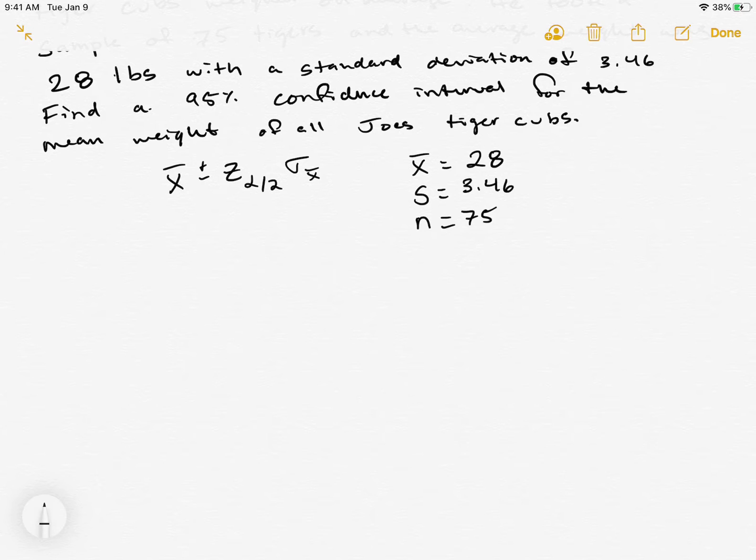Alpha is going to be 0.05. For a 95% confidence interval we do 1 minus 0.95, which gets us 0.05. Alpha over 2 is equal to 0.025.